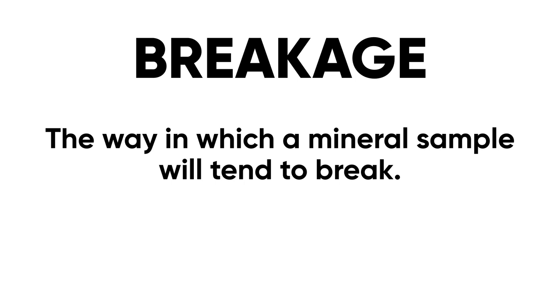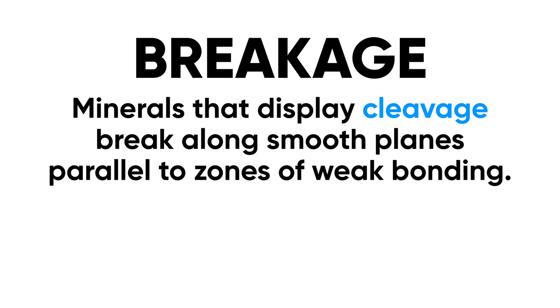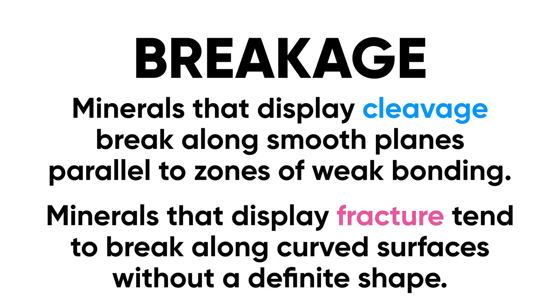Then we have breakage — a term referring to how the mineral breaks apart, the way in which the mineral sample will tend to break. We have two main types: the first is cleavage. Minerals that display cleavage will break along smooth planes parallel to where the weakest bonds are — you can identify this by looking for samples that almost look like they've been cut by human beings, but that's just cleavage breaking in a predictable way. As opposed to cleavage, we have fracture: minerals that display fracture break along more irregular or curved surfaces without much of a definite shape.